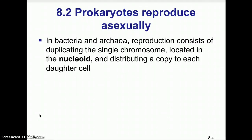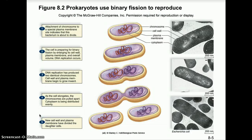Prokaryotes reproduce asexually. In bacteria and archaea, reproduction consists of duplicating the single chromosome found in the nucleoid region and distributing a copy to each daughter cell. In binary fission, the chromosome attaches to the plasma membrane in the nucleoid region, is replicated — meaning it is copied — and DNA replication produces two identical chromosomes.